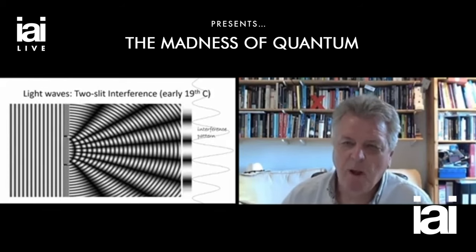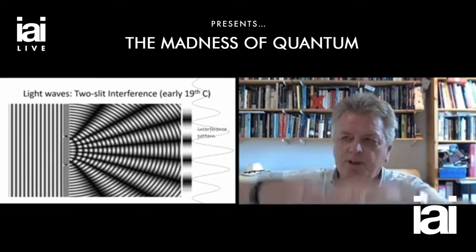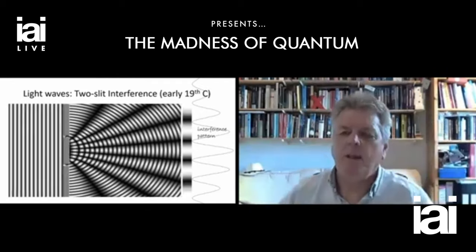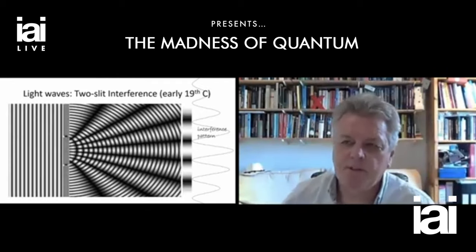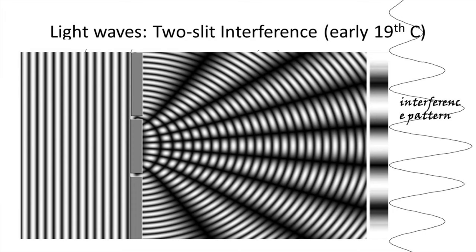What the interference pattern means is that the waves are combining: where they overlap to give a big peak, that's called constructive interference; where both waves are in a trough, that gives a deeper trough; and where a peak and trough coincide, they cancel out, producing a dark fringe. So you had one set of equations for the motions of objects and another for the motions of waves.